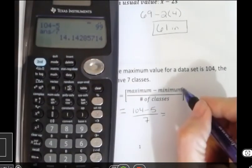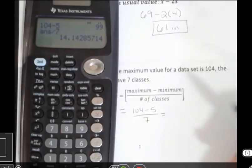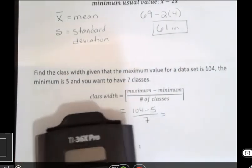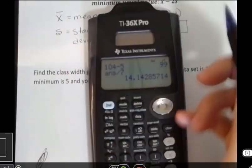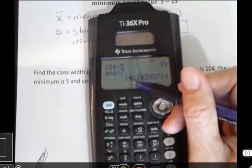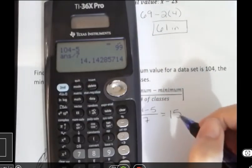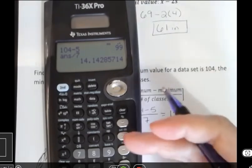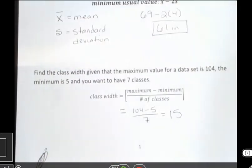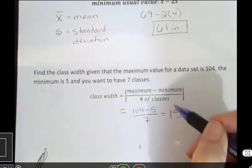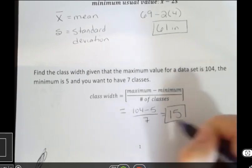But notice I have this bracket around that. That means something. That means round it up to the nearest value that's as precise as your data was. So we had whole numbers, so we want to round this up to the next whole number, which would be 15. So I would not round down to 14, otherwise I would leave out some of my data values. So I have to always round up to the next highest number that has the same precision as what I was putting into that. So that would be 15.